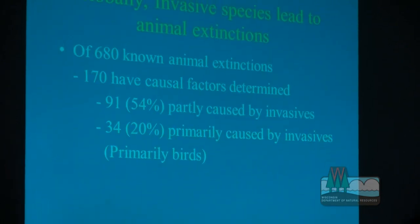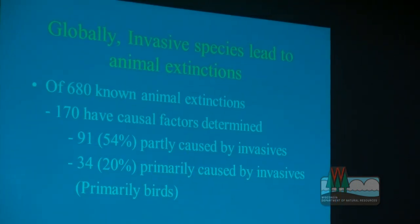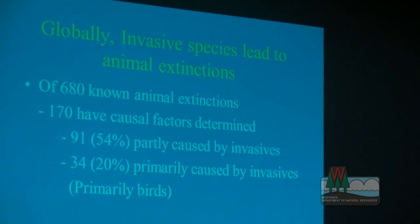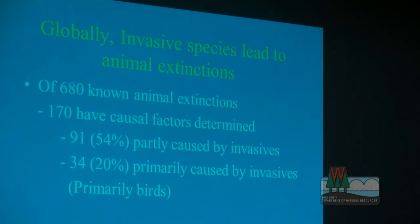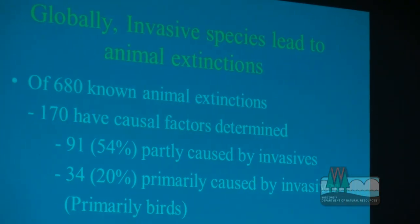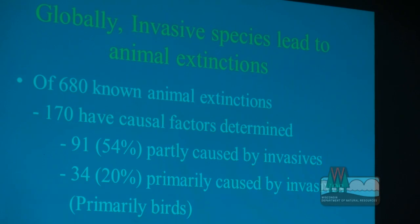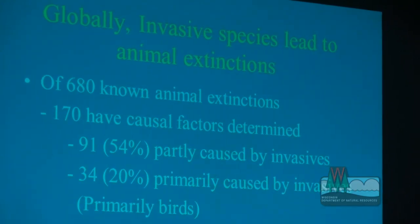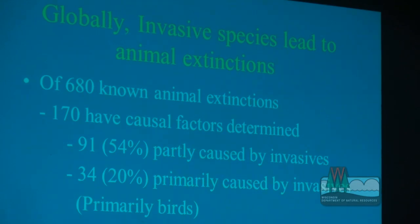If you're not convinced that invasives are an issue for birds: at the global level, over 50% of global extinctions have been caused in part by invasives, and about 20% primarily by invasives. Most of these are birds on islands killed by rats, cats, and other mammals. We don't yet see invasive plants causing this level of endangerment, but there are major impacts. An example is the Apostle Islands, our primary piping plover nesting habitat — a federally endangered bird — whose habitat is being invaded by a non-native annual tumbleweed that we must remove before it produces seed.